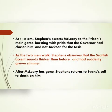At 11.25 a.m., Stephens escorts McClary to the prison's main gates. Stephens was bursting with pride that the governor had chosen him and not Jackson for the task. McClary is the invigilator who had come to attend the examination. As the two men walked, Stephens observes that McClary's Scottish accent sounds thicker than before, and he notices that McClary had suddenly grown slimmer. After McClary has gone, Stephens returns to Evans' cell to check on him as per the governor's orders.